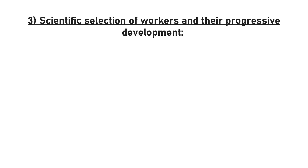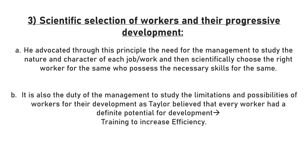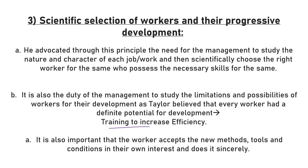Number three is scientific selection of workers and their progressive development. Taylor advocated understanding the nature of the job and selecting the person best suited for it. It is also the management's duty to study the limitations and possibilities of workers and increase their efficiency through training over time. It is also important that workers are open to accepting new methods, as upgrading skills increases overall organizational efficiency.